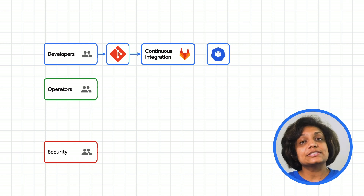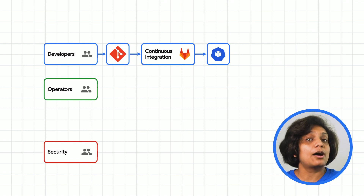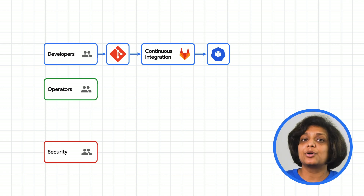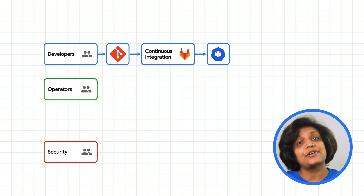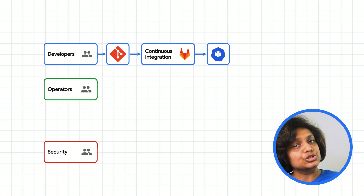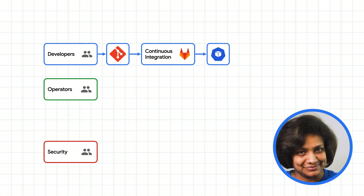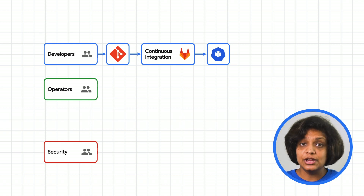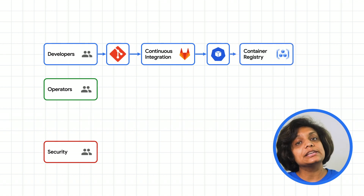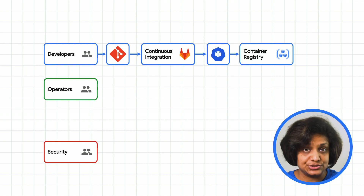A continuous integration tool tests the code and then creates an artifact. When we're talking about deploying to Kubernetes clusters, our artifacts are container images that will eventually be pushed to production. Once continuous integration creates that container image, it will store it in container registry.